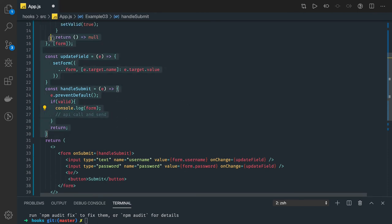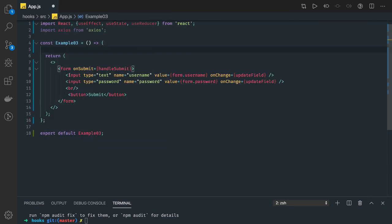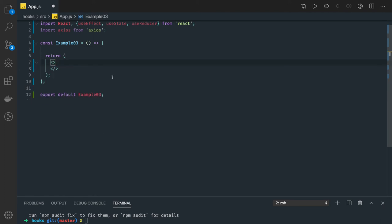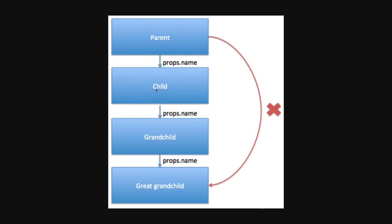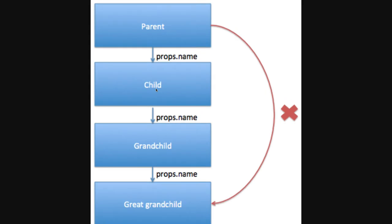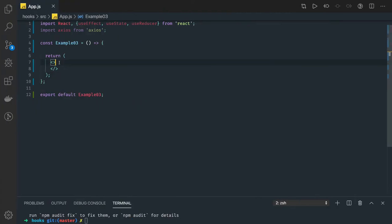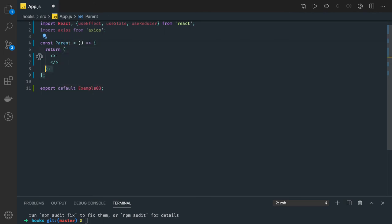Now we are going to wipe that out and talk about another very important hook. We are going to discuss a common problem you face while writing components. I'm sure you might have faced this problem where you are passing props from parent to child, to grandchild, to great-grandchild. If you are not using useContext or Context APIs, what option is left? You will keep passing: parent props.name, child props.name, grandchild props.name. Let's put this in code — example three. Let's say this is a Parent component.